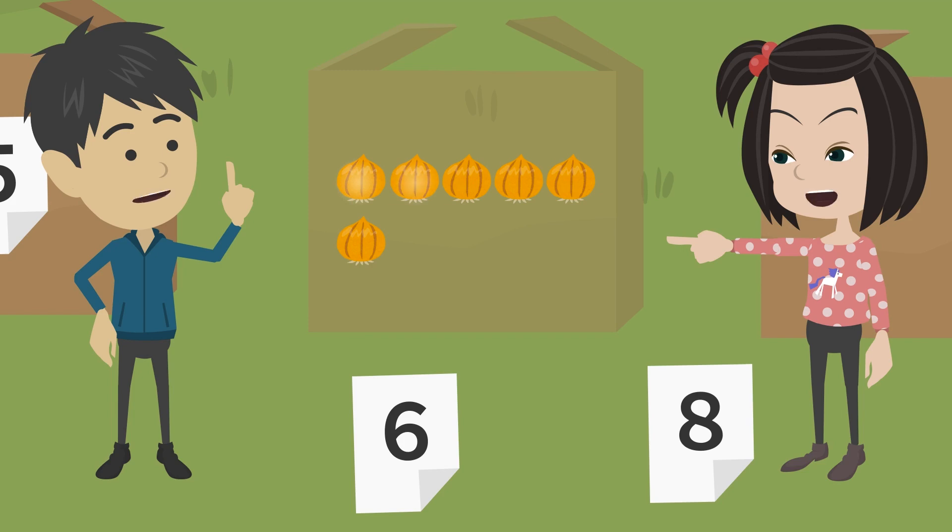1, 2, 3, 4, 5, 6. There are 6 onions in this box.